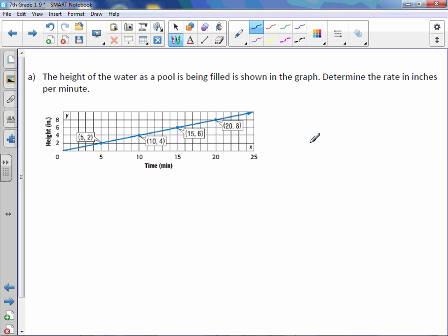The height of the water as a pool is being filled is shown in the graph. Determine the rate in inches per minute. This is a direct variation because it's a straight line that passes through the origin, which means it's also proportional. So determine the rate in inches per minute. Well, we can use what we use to find slope to help us find our rate.